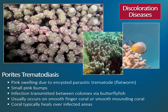Parites Trematodiasis is a common disease that results in numerous small pink bumps across the coral surface. This disease occurs on smooth finger coral (Parites compressa) and smooth mounding coral (Parites lobata). These pink bumps are only about one quarter of an inch in diameter and are frequently clustered together. Trematodiasis is caused by a parasitic infection by a trematode or flatworm. The parasite uses the coral as an intermediate host and the coral-feeding butterfly fish as their final host. Butterfly fish get the infection when they consume infected coral polyps, and the parasite lives in the butterfly fish's intestines. Coral becomes infected when the fish releases parasitic eggs with their feces, and the larval parasite embeds in the coral tissue, causing the raised pink bumps. Infected corals have reduced growth but usually little tissue loss over time, so this disease is not considered a serious threat to Hawaii's corals.